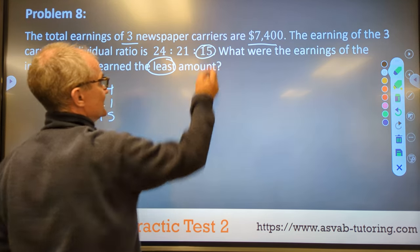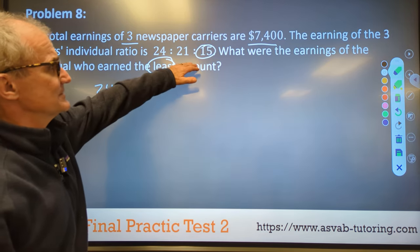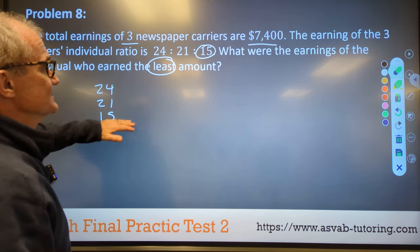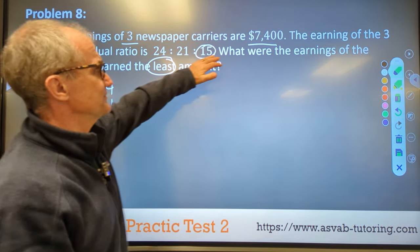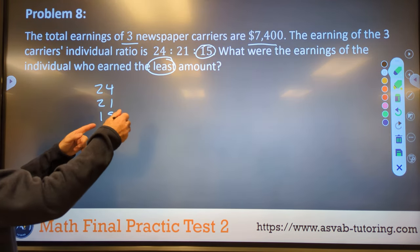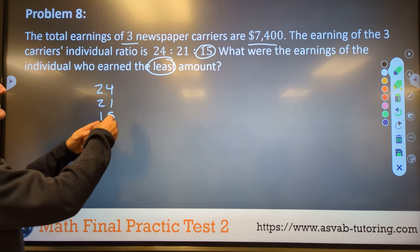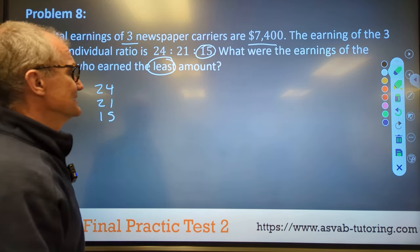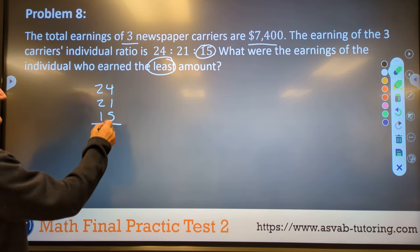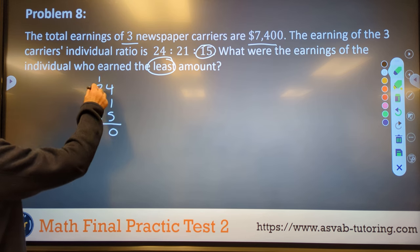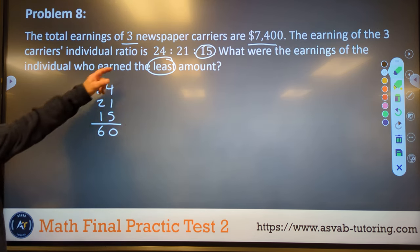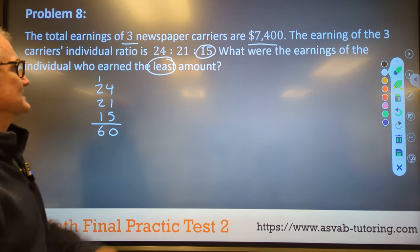What were the earnings of the individual who earned the least? So we want to figure out how much of that person at the ratio of 15, what they earned. So I've got to do the full sum of theirs of that $7,400. Then I'm going to come up with how much each little share earns. And then I'm going to take that value and multiply it by 15. So it's a little complex. I've got 4 plus 1, 5, and 5 is 10. Carry the 1, 3, plus 2, 5, 6.